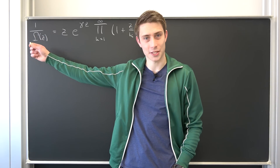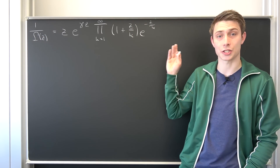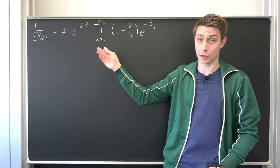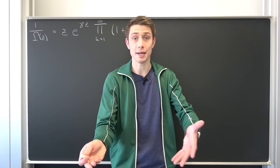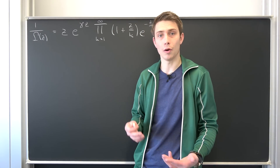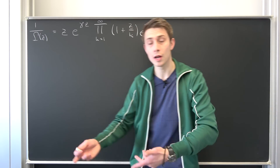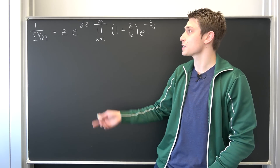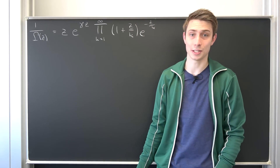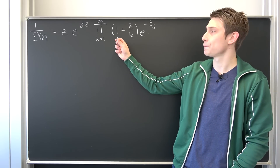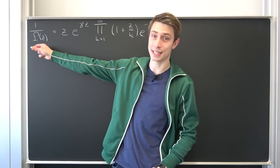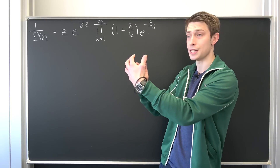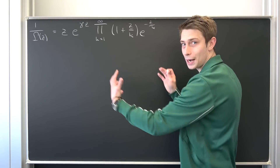Gamma function once again. This right here is the Weierstrass definition, and our goal today is to backwards engineer this Weierstrass definition to the Euler definition of the Gamma function. We know that the Euler definition is exactly equivalent to our integral definition of the Gamma function. So by the transitivity of our equivalence relation — namely the equal sign — this Weierstrass definition is exactly equal to our integral definition. This is bloody epic because this right here is the Gamma function and this right here is the Euler–Mascheroni constant — two absolutely great things in analytic number theory combined in one formula.